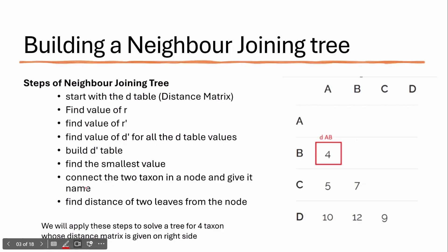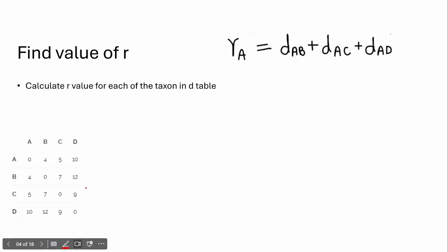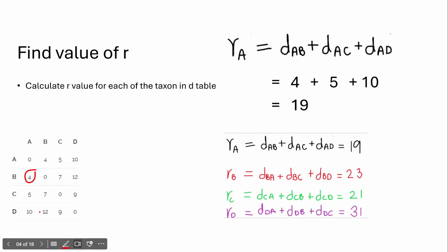The first step is to find the value of R. To find R, we take the sum of distances of each taxon with all other taxons. The distance of taxon A with B is 4, with C is 5, and with D is 10. Adding them together gives us R_A = 19.